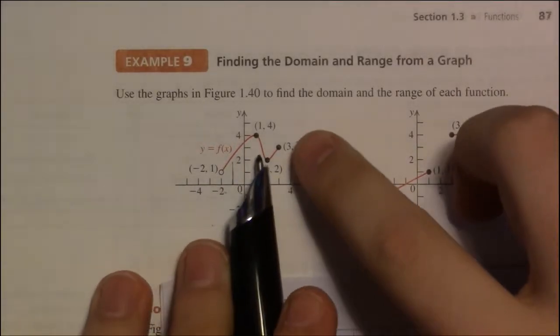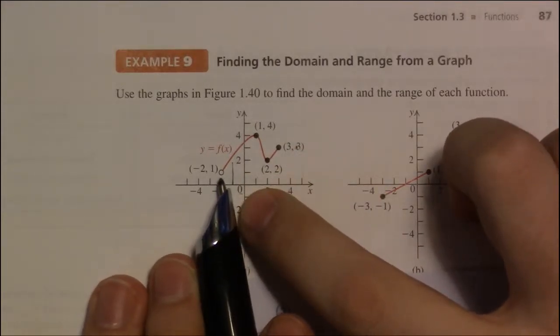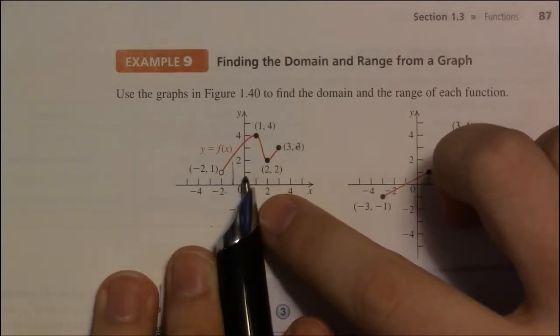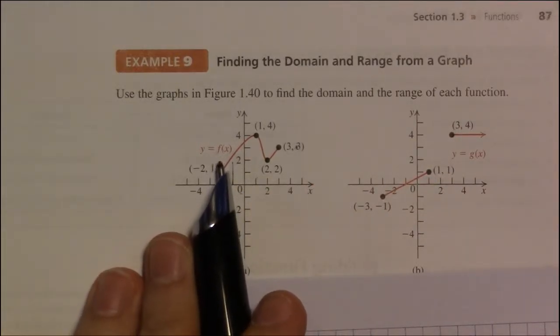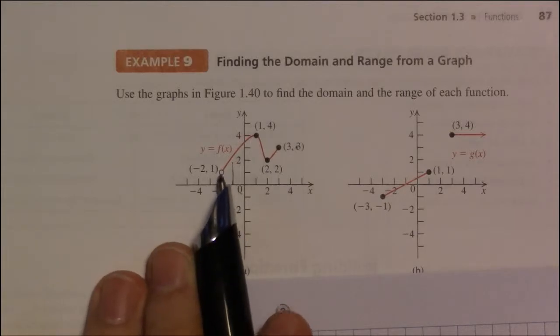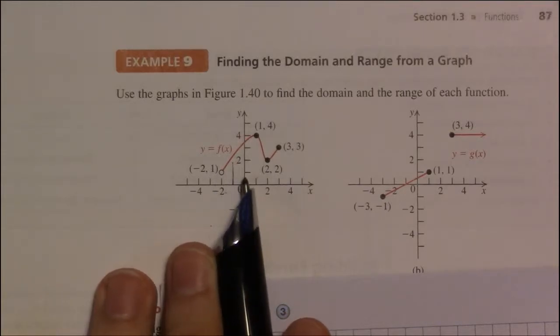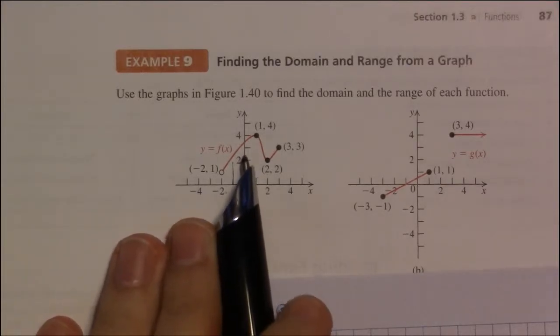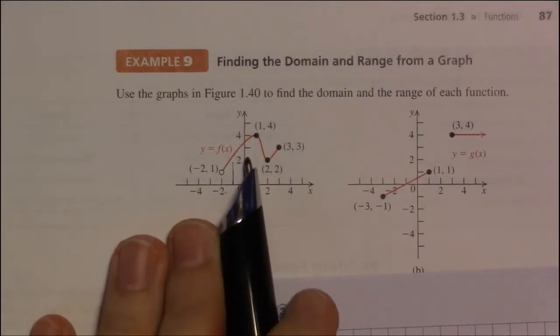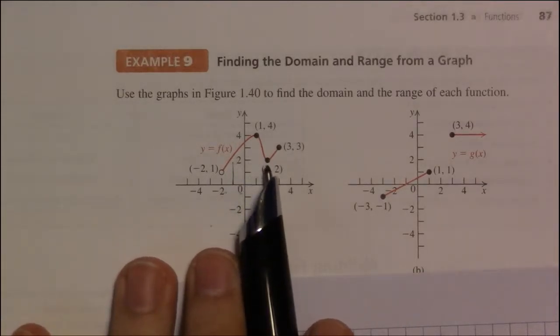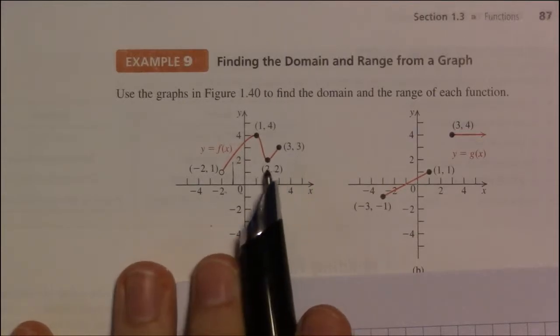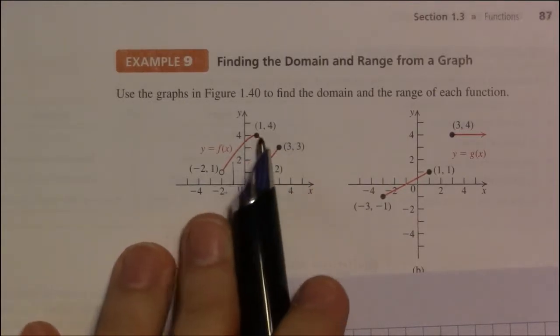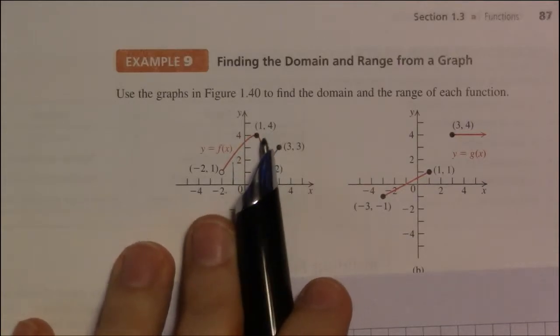So, our lowest y value happens to be here. And so, 1 is the lowest y value, but it's not actually a y value of the function. It never actually hits this point. So, we'll exclude 1, but everything above 1, just above 1, is going to be included. The highest point, here we have a y value of 2, but here a y value of 3, that's higher, and the highest y value is here, of y equals 4.